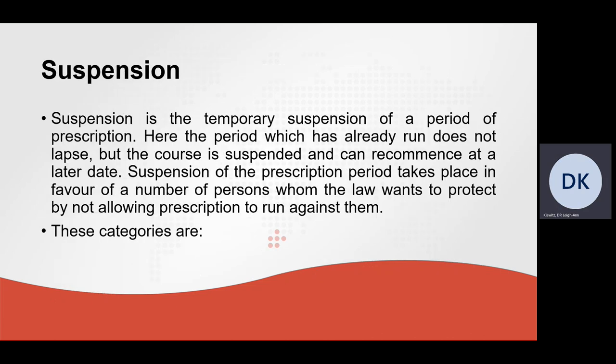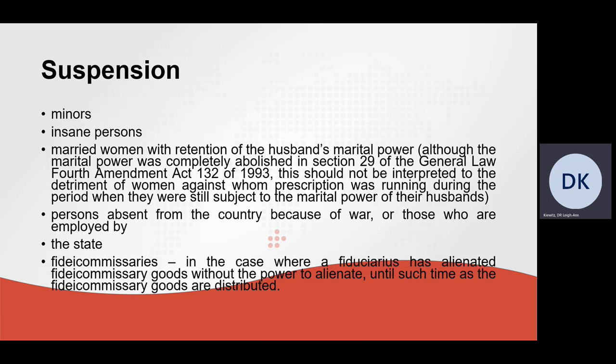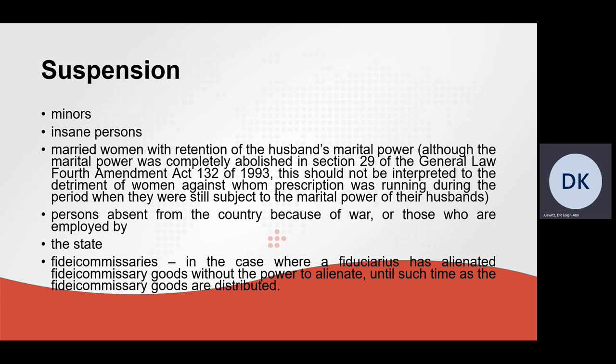Prescription can also be suspended. Suspension is the temporary suspension of a period of prescription: the period which has already run does not lapse, but the course is suspended and can recommence at a later date. Suspension of the prescription period takes place in favour of persons whom the law wants to protect by not allowing prescription to run against them. These categories of persons include minors, insane persons, married women subject to the husband's marital power, persons absent from the country because of war or employed by the state, and fideicommissaries in the case where a fiduciary has alienated fideicommissary goods without the power to alienate, until such time as the fideicommissary goods are distributed.